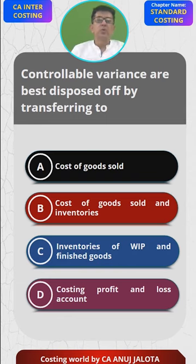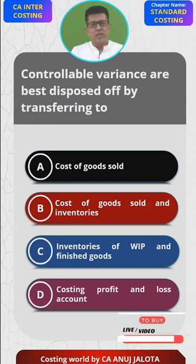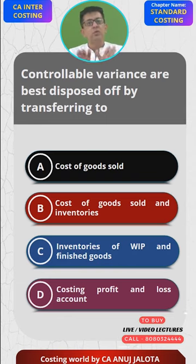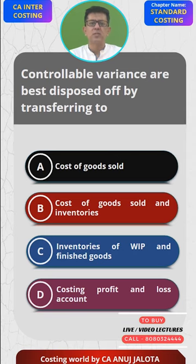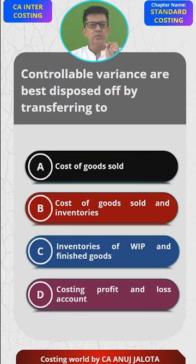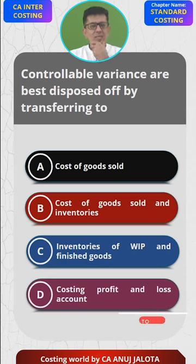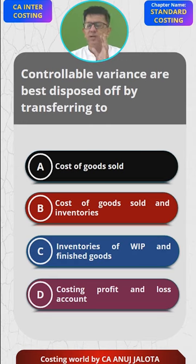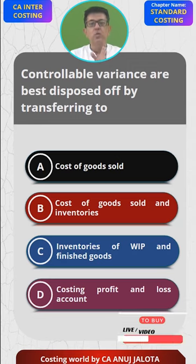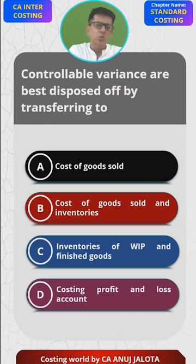Whenever you compute any variance in standard costing, in reality it is always divided into two parts. One of them is controllable, one of them is uncontrollable. Uncontrollable means that it was not your mistake. To give you a small example: standard price was set at Rs. 2, but then in the market there was a huge shortage of this kind of material, which we could not have anticipated in the beginning. So the normal market price increased to Rs. 2.5.